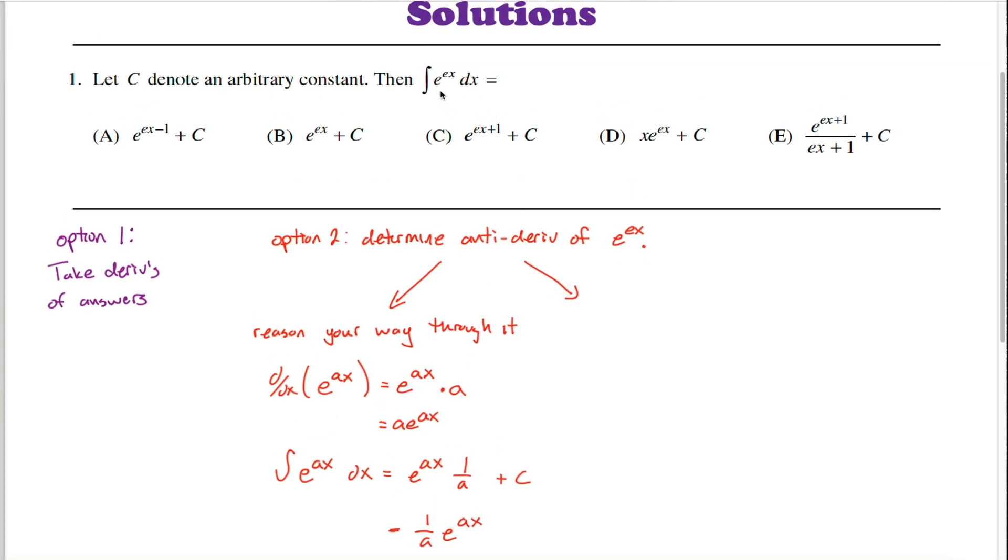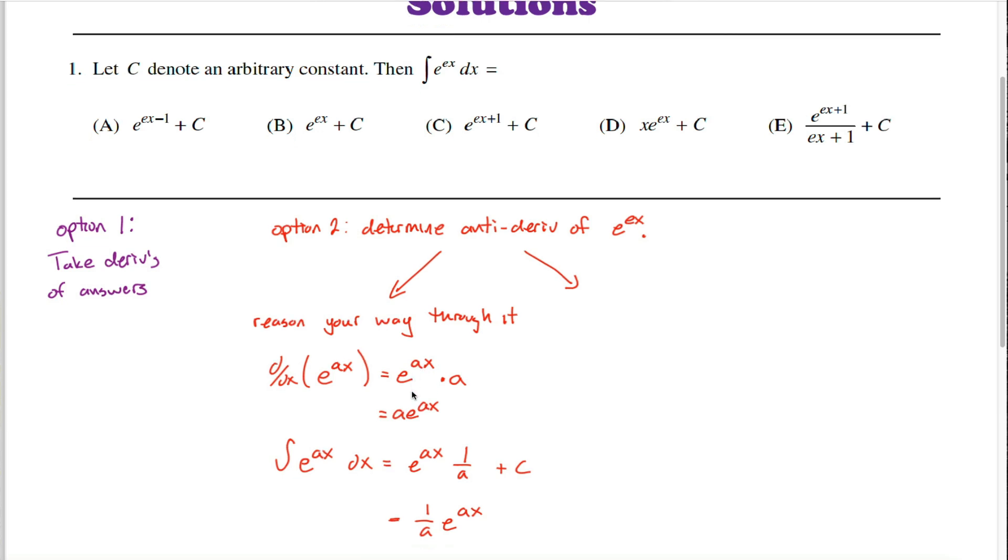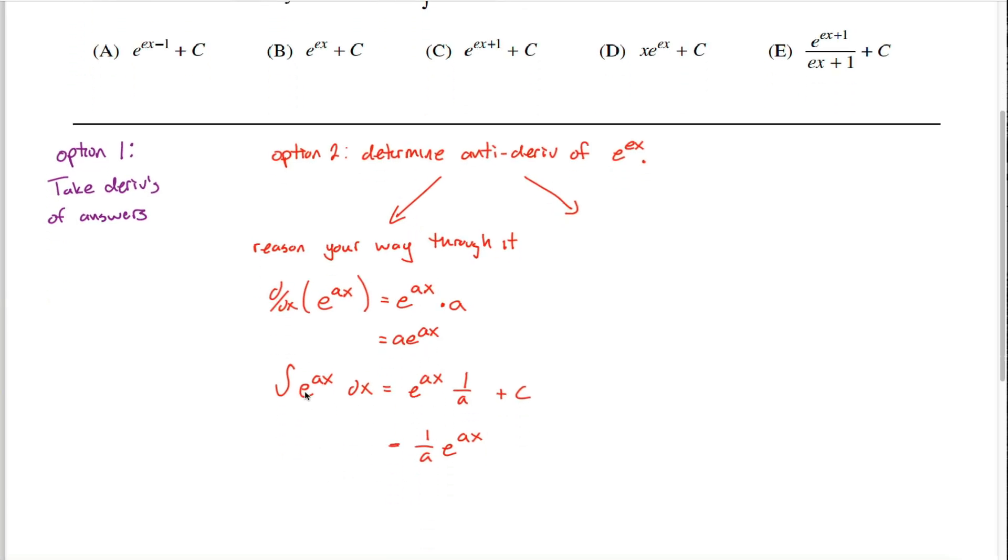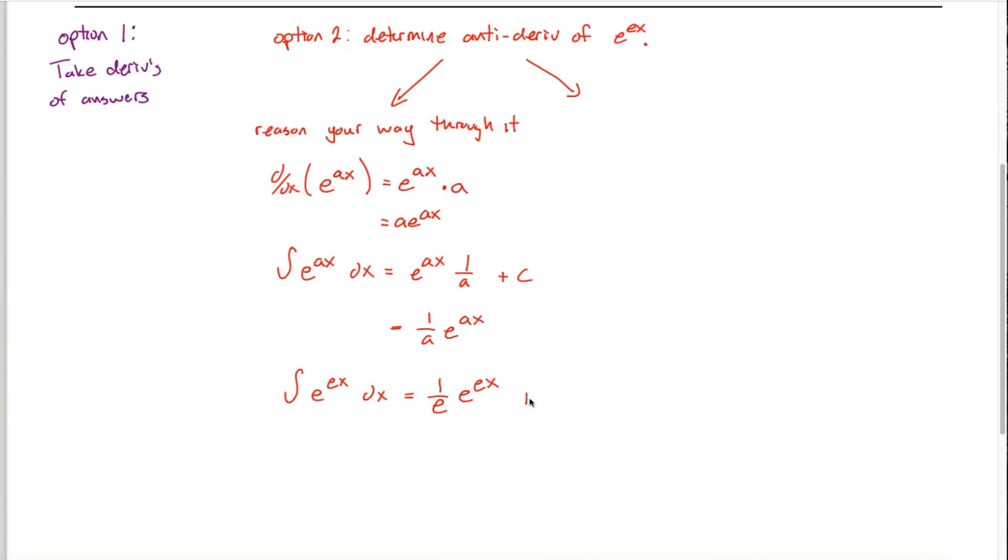This question asks me for e to the ex power, but e is just some arbitrary constant when it's a coefficient on x. Don't let the fact that this is the same letter as you see down here throw you off. You treat this e up in the exponent like it's any other constant. So the antiderivative of e to the ex power is just 1 over e times e to the ex power. I should tack on a plus c, and then I'd be done.